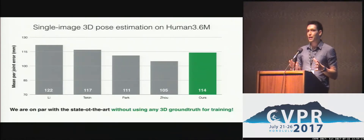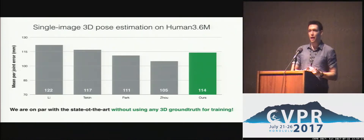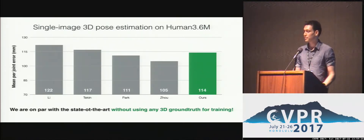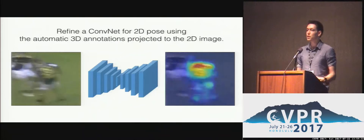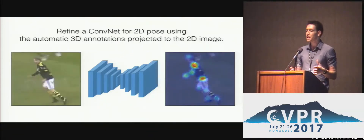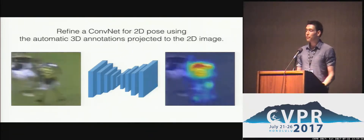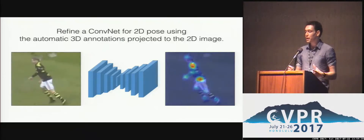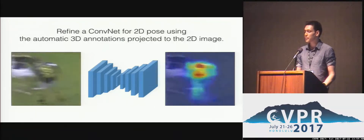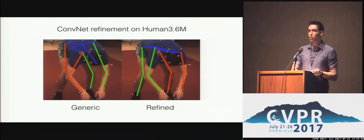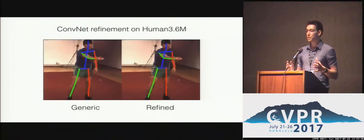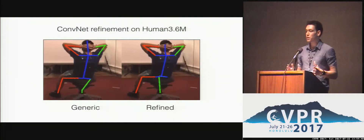This means that our automatic annotations can be as valuable as the actual and expensive 3D ground truth when it comes to ConvNet training. Another interesting use case for our 3D annotations is to project them back to the image and use them as 2D annotations to refine a generic ConvNet to the particular task of interest. This refinement offers an automatic way to adapt a generic ConvNet to the discriminative appearance of a specific user and improves 2D pose estimation.